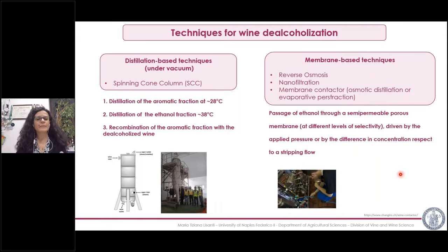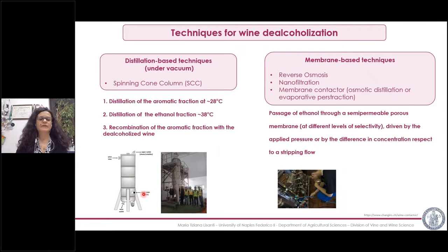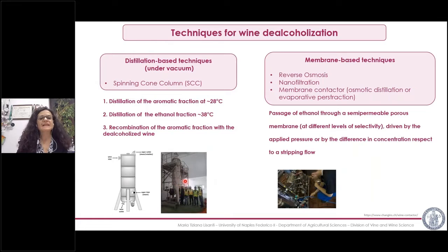Among the distillation-based techniques, the most used is the spinning cone column, which you can see here. These are very large machines, and normally there are dedicated facilities where wine is de-alcoholised by this technique. Distillation is carried out under vacuum in order to separate ethanol at low temperatures that do not damage other wine components, such as aromas.